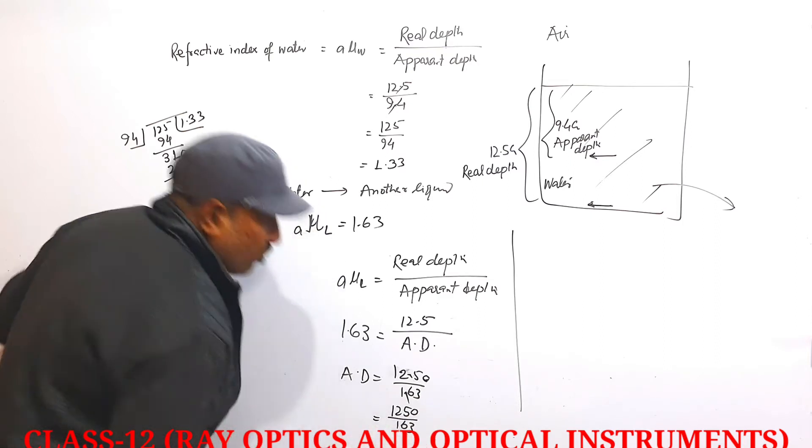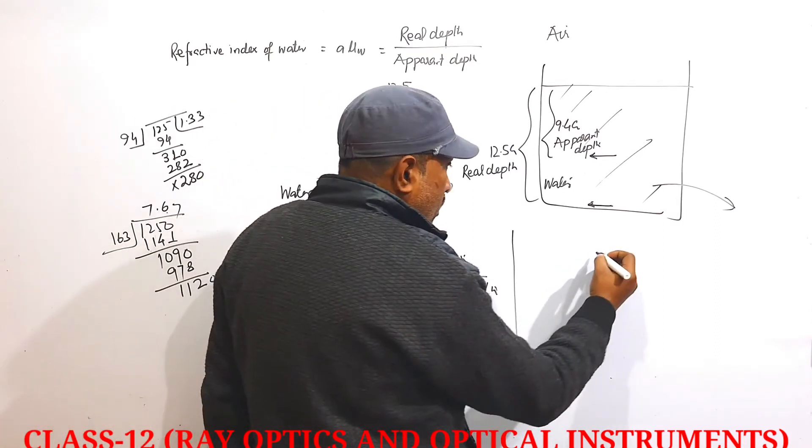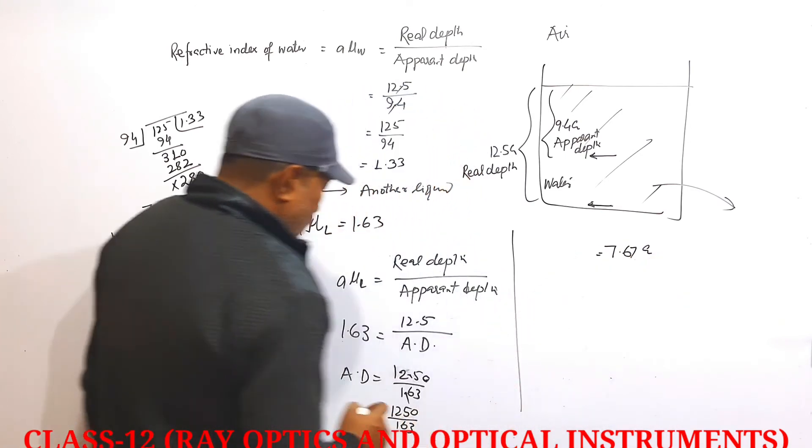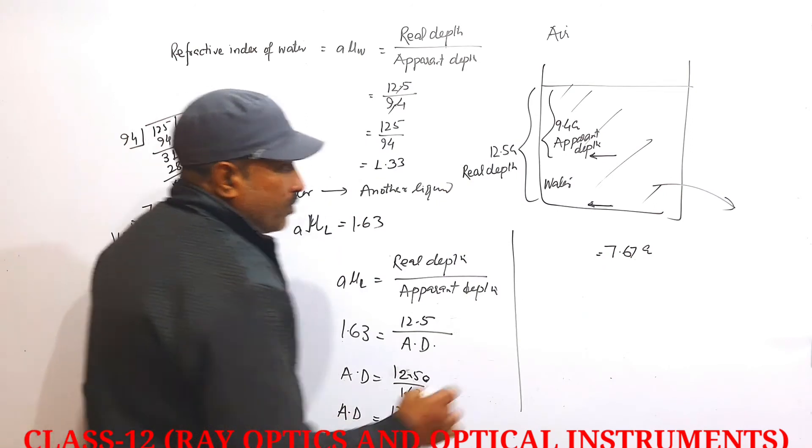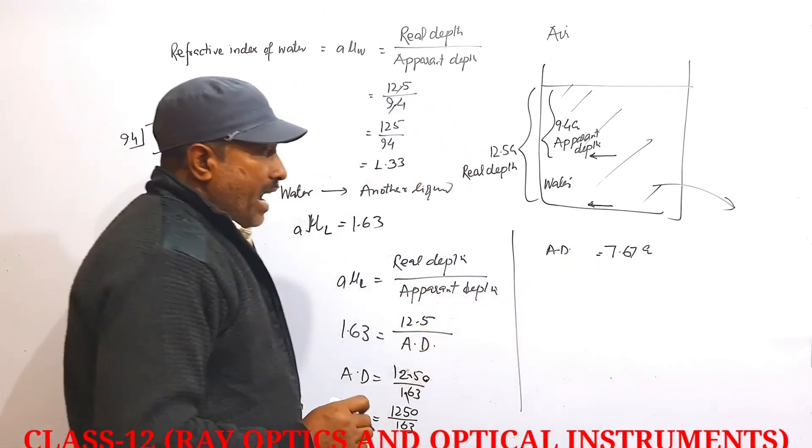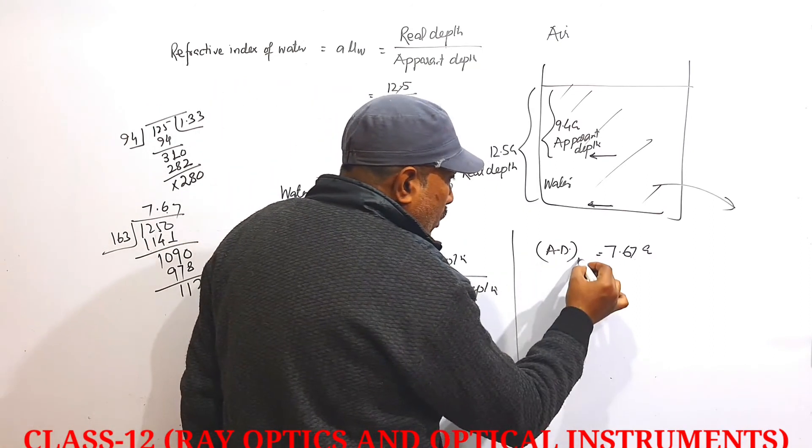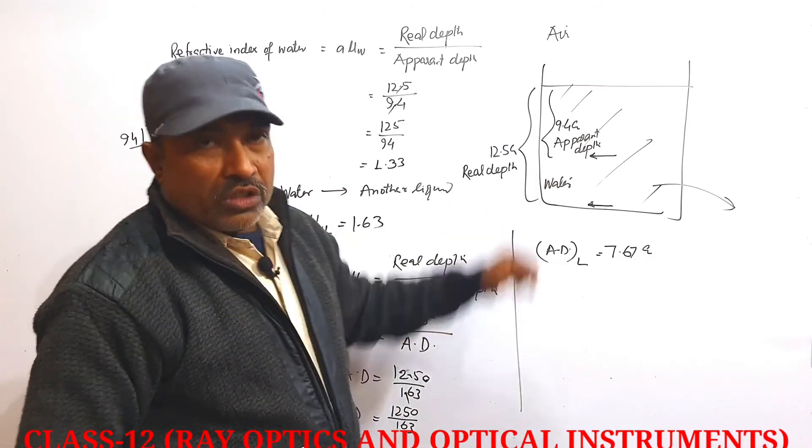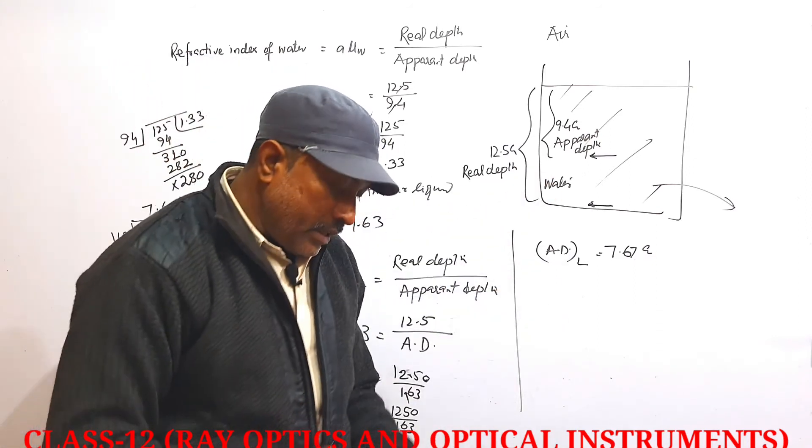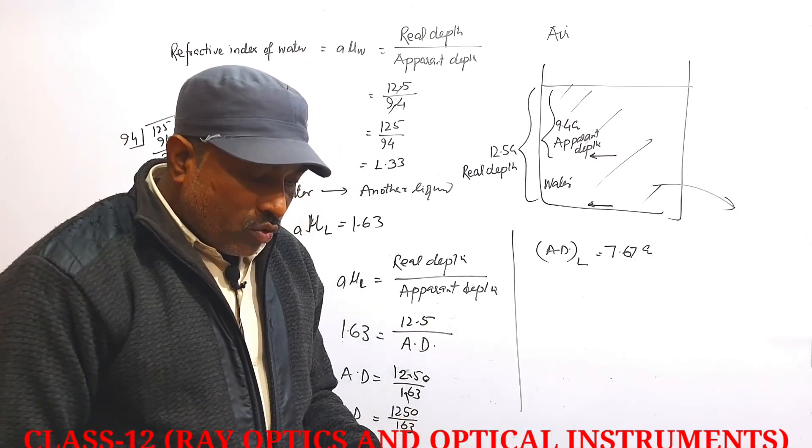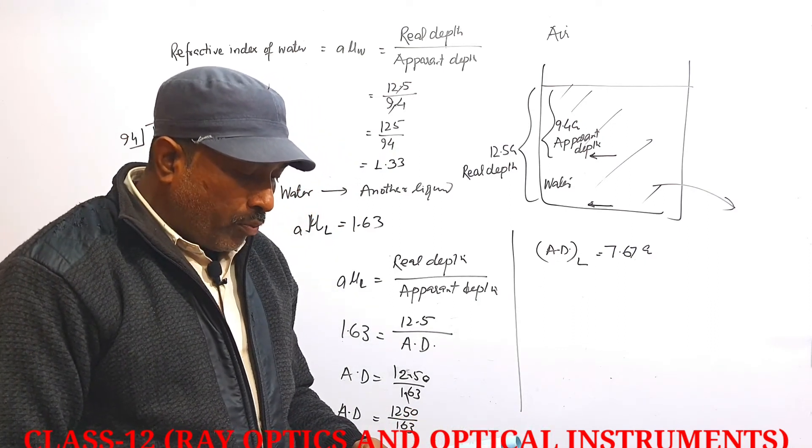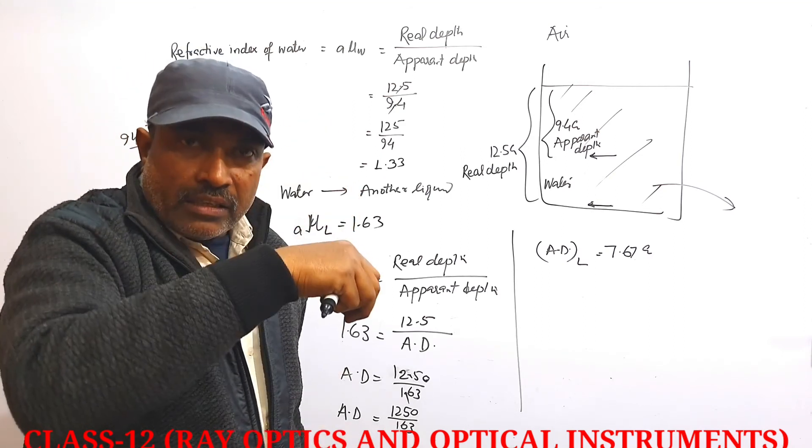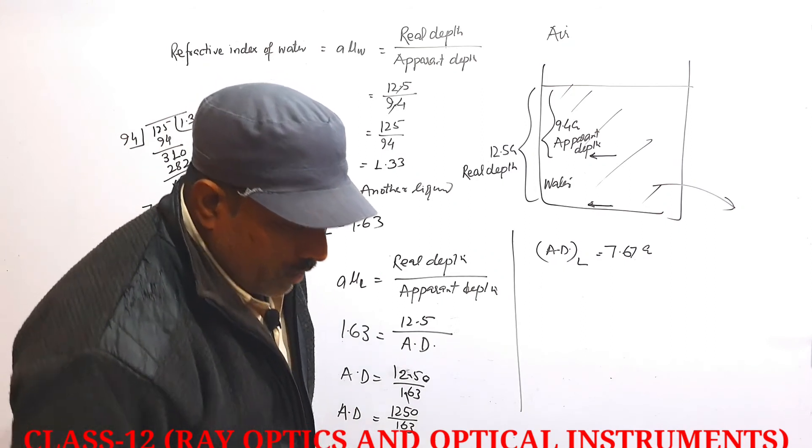The value comes to 12.5 divided by 1.63 equals 7.67 centimeters. This is the apparent depth when the liquid is filled. But initially the apparent depth was 9.4 centimeters. The question asks by what distance the microscope has to be moved to focus on the needle again.